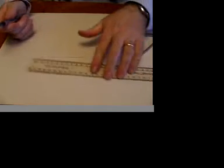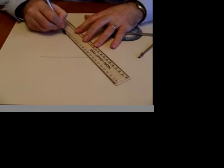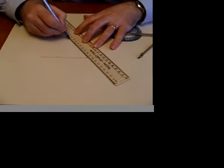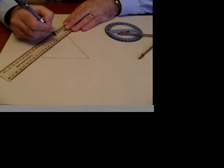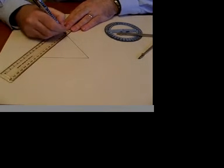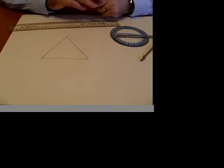Then take the pencil and ruler and from where the arcs intersect, draw a line to one end of the line, which forms one side of the triangle. Again, from where the lines intersect, draw a line to the other end of the line and we have an equilateral triangle.